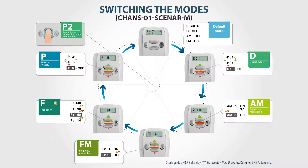After it is switched on, the Scanner01M device is always in its default state. The default state means that the set frequency is 60 Hz, and the frequency modulation, the amplitude modulation, and the dose modes are switched off.